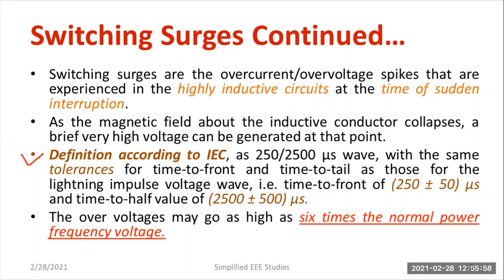According to IEC standard, switching surges are defined with a wave front time equal to 250 microseconds and wave tail time equal to 2500 microseconds. Including tolerance, the wave front time is in the range of 250 ± 50 microseconds, and the wave tail time including tolerance is 2500 ± 500 microseconds. Moreover, the overvoltage may go as high as six times the normal power frequency voltage — almost six times the magnitude can be produced due to switching surges.